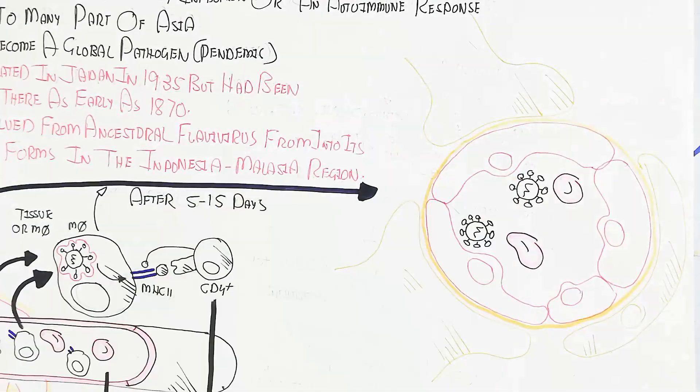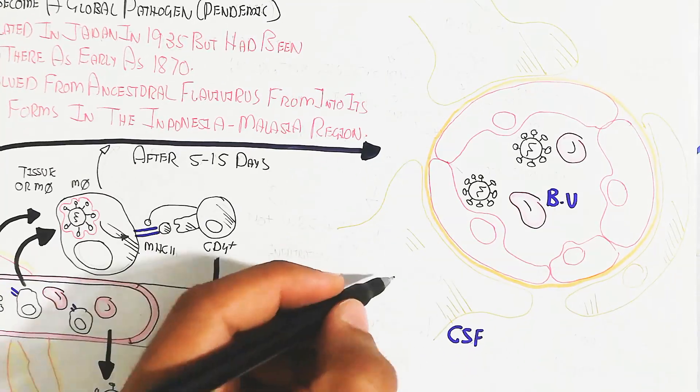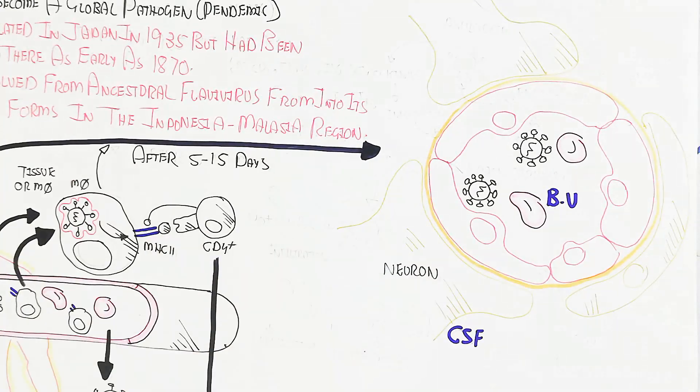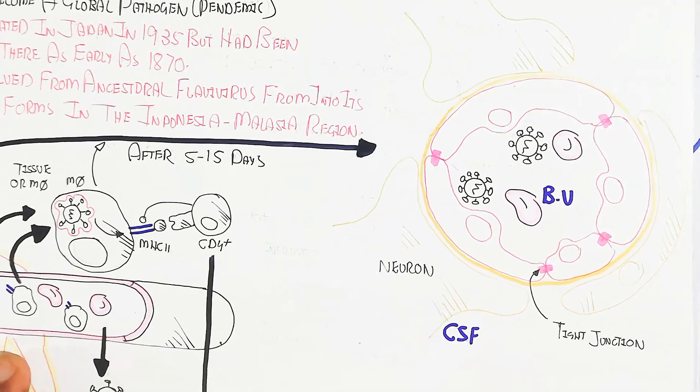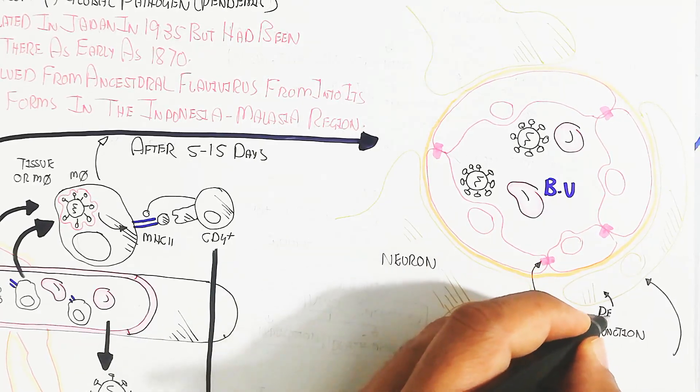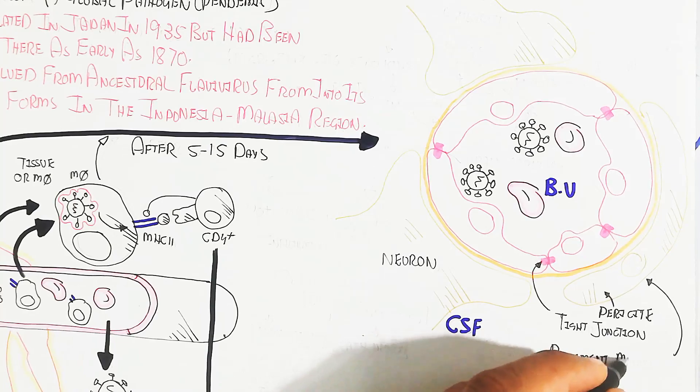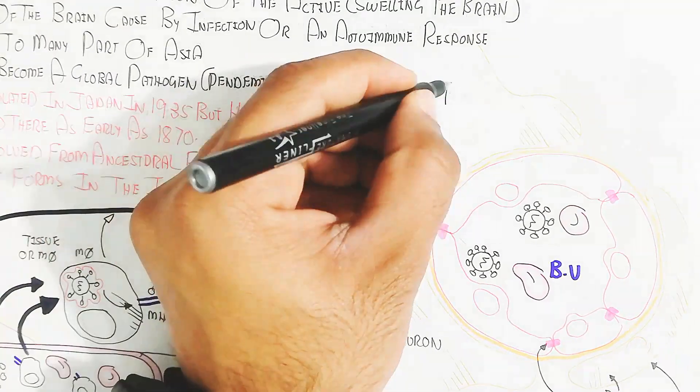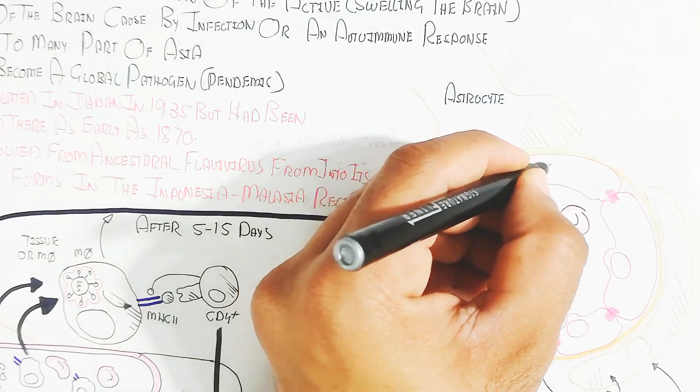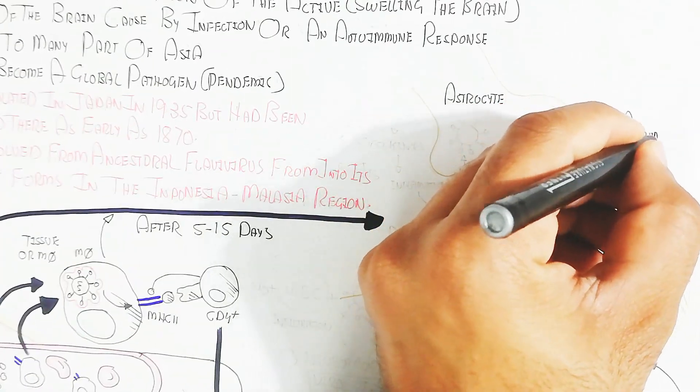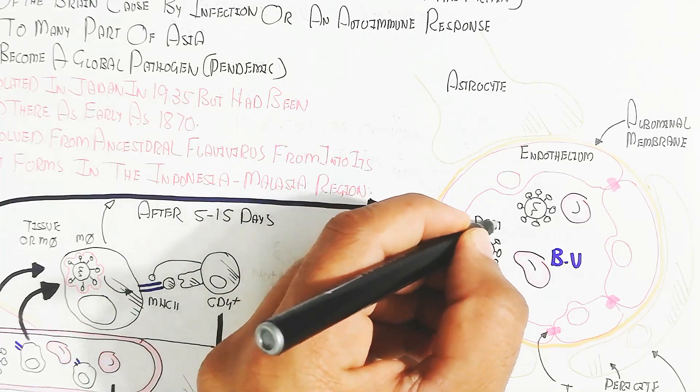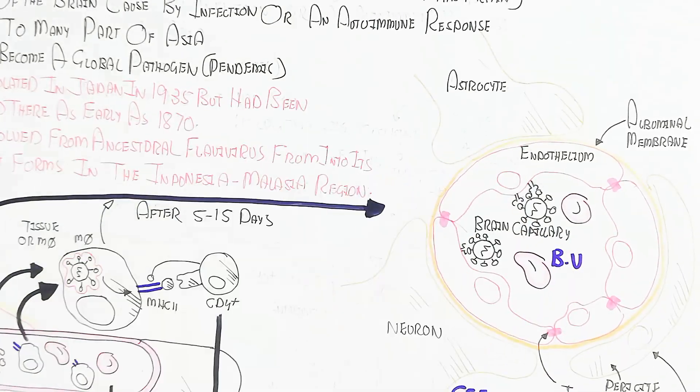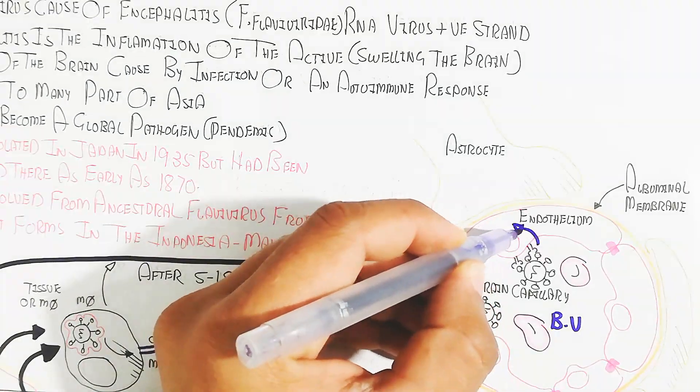Let's draw the blood-brain barrier. This is the blood vessel, and this is the cerebrospinal fluid. This is the neuron and the tight junction which will not allow virus invasion into the cerebrospinal fluid. This is the basement membrane and the pericyte, a supportive part of the brain circulatory system. This is the astrocyte, the star-like shaped neuron. The albuminal membrane also protects due to its negative charge, not allowing entry of positive charged things.